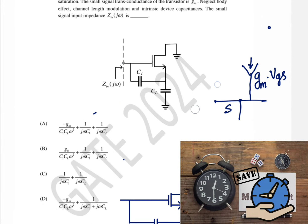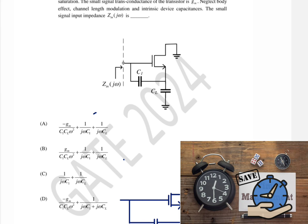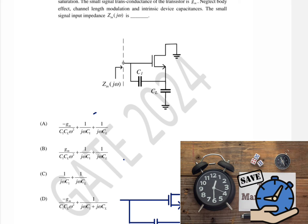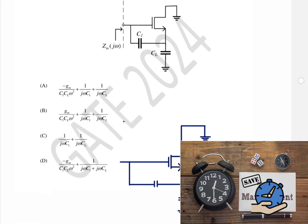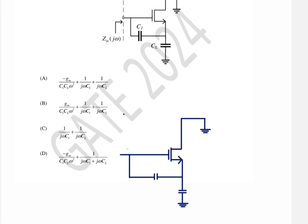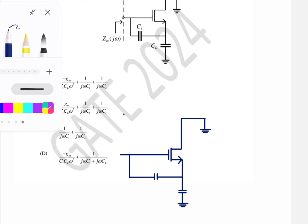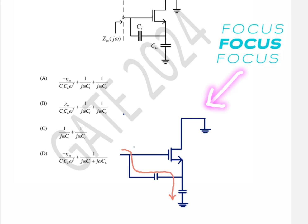If you draw the entire small signal diagram and calculate, it will take too much time — but this is just a one-mark question, so we can't waste that much time. Looking at the circuit, if we apply i_in, that current is going to flow through the circuit like this.